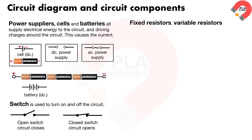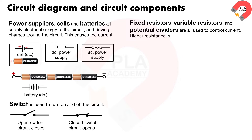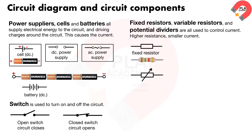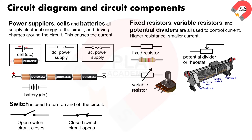Fixed resistors, variable resistors, and potential dividers are all used to control current. Higher resistance means smaller current. This is the symbol of a fixed resistor. This is the symbol of a variable resistor, also known as a potential divider or rheostat. Its resistance can be varied by moving the sliding contact, which changes the length of the wire and the resistance of the potential divider.